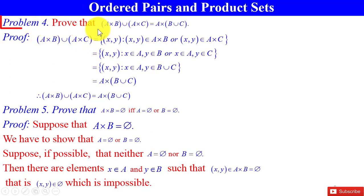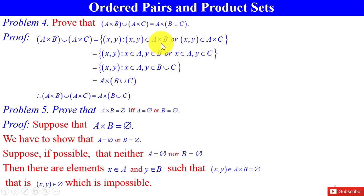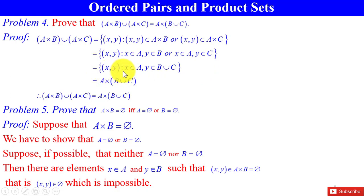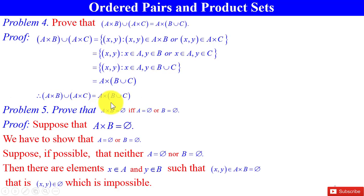Problem 4: Prove that A×B ∪ A×C = A×(B∪C). Proof: A×B ∪ A×C is the set of ordered pairs (x, y) such that (x, y) belongs to A×B or (x, y) belongs to A×C. This equals the set of (x, y) such that x belongs to A and y belongs to B, or x belongs to A and y belongs to C — which implies y belongs to B∪C. Therefore A×B ∪ A×C = A×(B∪C).